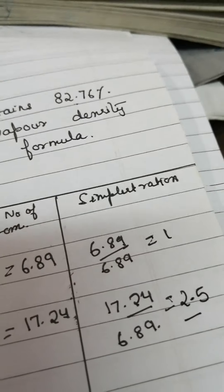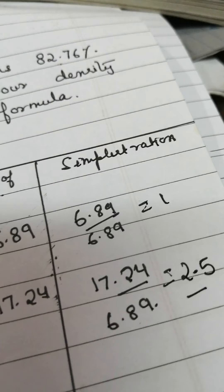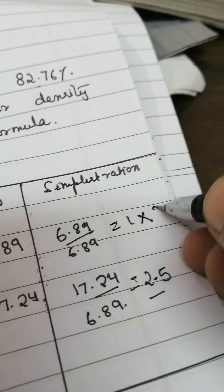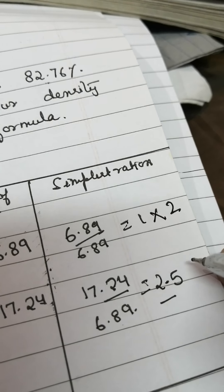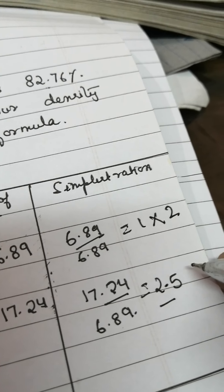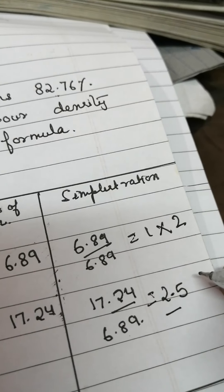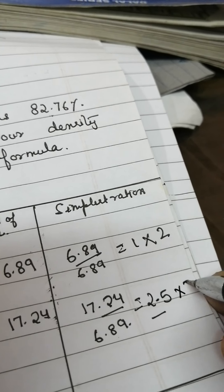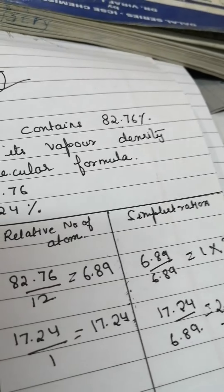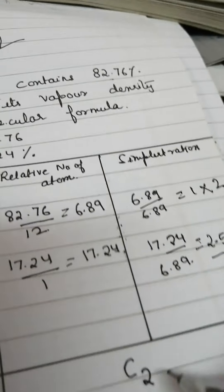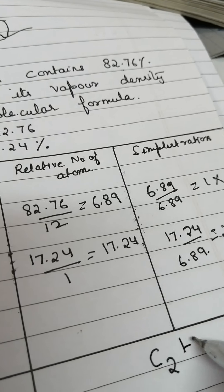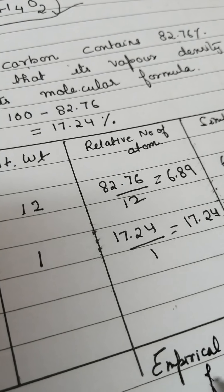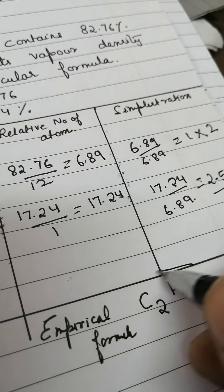For the empirical formula we need whole numbers. If a value is like 1.8 or 2.1, you can round it to 2. But if it comes out to around 2.5, 2.6, or 2.4, you must multiply both numbers by 2. So multiplying by 2: carbon becomes 2 and hydrogen becomes 5. The empirical formula is C2H5.